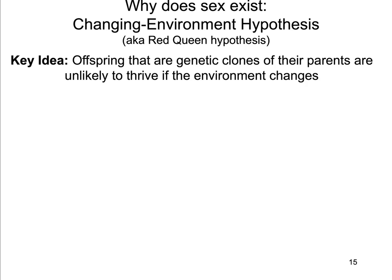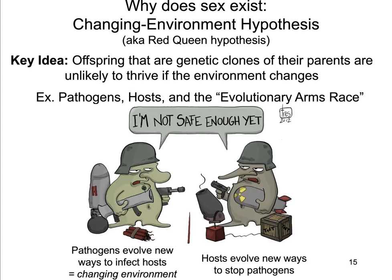The other major hypothesis for why sex exists is the changing environment hypothesis, sometimes called the red queen hypothesis. It says that genetic clones produced by asexual reproduction are unlikely to thrive in a changing environment. If environmental conditions change and everything is genetically identical with no variation, all individuals will be selected against. The classic example is the evolutionary arms race between pathogens and hosts — someone gets one weapon, so you have to get a slightly better weapon, back and forth.